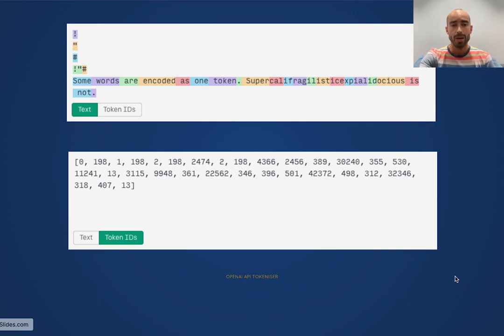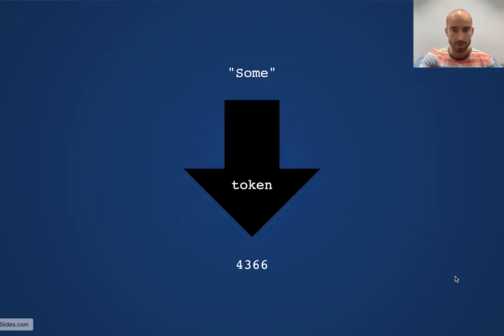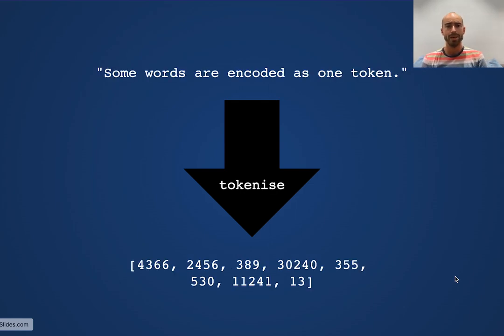Before we go any further with explaining the transformer architecture, I'm just going to introduce a couple of helper functions. These helper functions will allow us to describe these upcoming architectures. So first up, we've got token, which takes a string and returns the equivalent token. And then we've also got tokenize, which takes a string of words and converts it into a list of tokens.